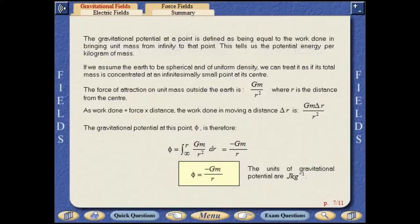This tells us the potential energy per kilogram of mass. If we assume the Earth to be spherical and of uniform density, we can treat it as if its total mass is concentrated at an infinitesimally small point at its centre.